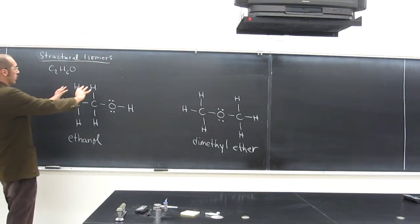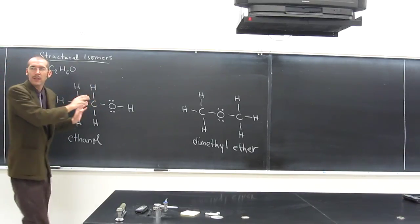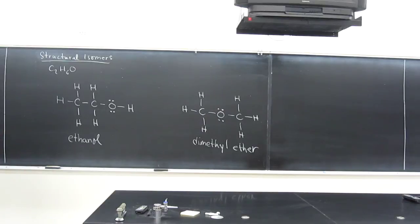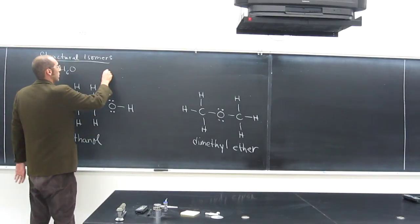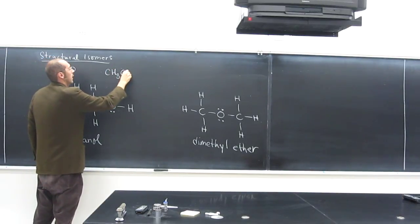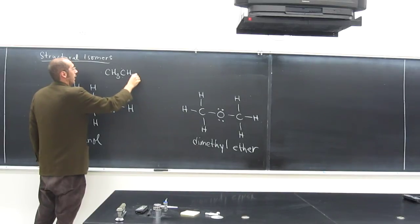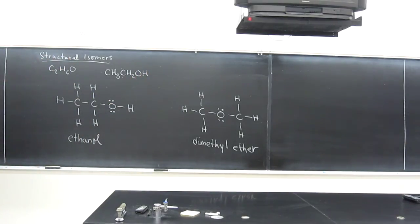We can do the condensed structures. Let's do the condensed structures first. Remember, condensed structures, we just squish everything together, like as if you were writing it on a typewriter. So the condensed structure of this one would be, you guys can help me, CH3. What would be next? CH2. OH. Very good.